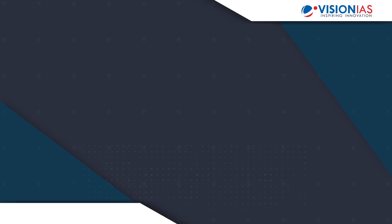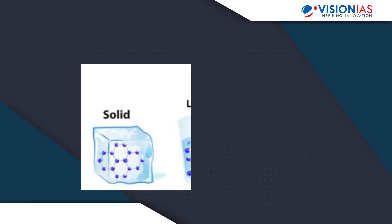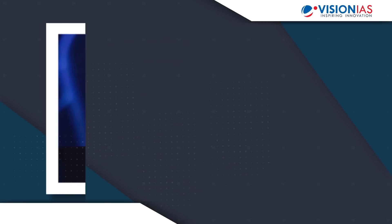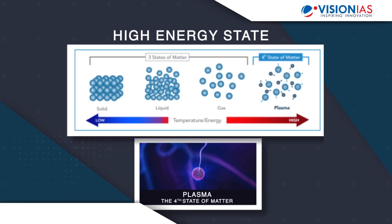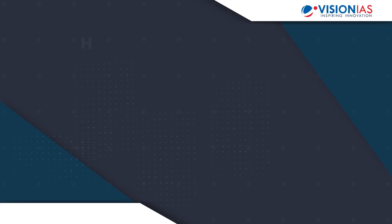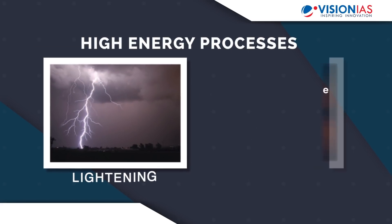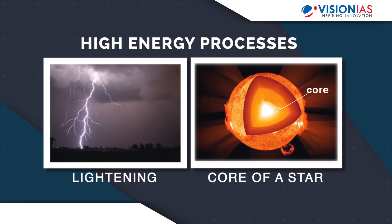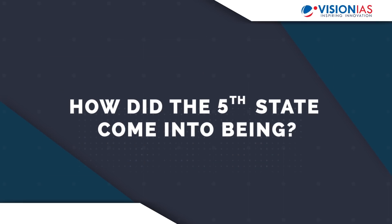In our daily life we generally interact with three states of matter: solid, liquid, and gas. The fourth state, plasma, is a high energy state and it occurs in high energy processes like during lightning or at the core of a star. So then how did this fifth state come into being for the very first time?